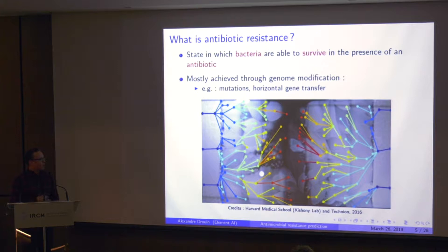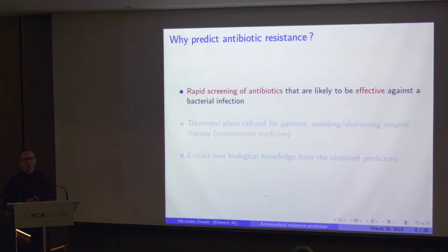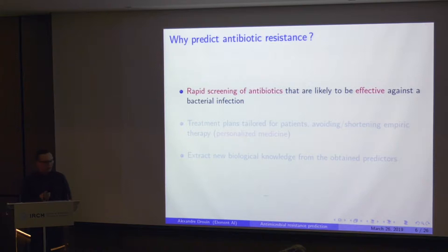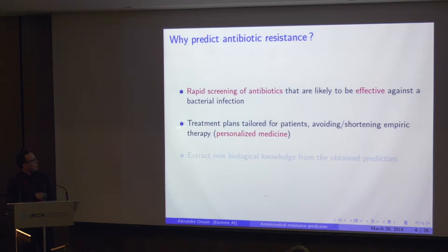Why would we like to predict antibiotic resistance using machine learning? It would be really interesting to rapidly screen which antibiotics would be effective in treating an infection — given a bacterium, can we say whether a given antibiotic will destroy it? That's a discrete phenotype. If we're able to do that, we can develop treatment plans tailored to the infection of an individual, specifically based on the bacterial population infecting them. This is an application of personalized medicine.